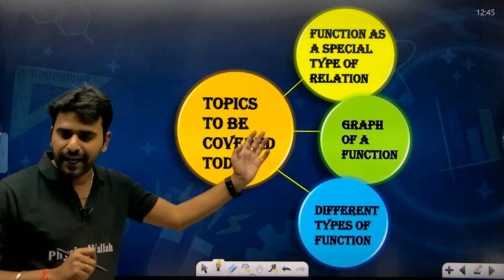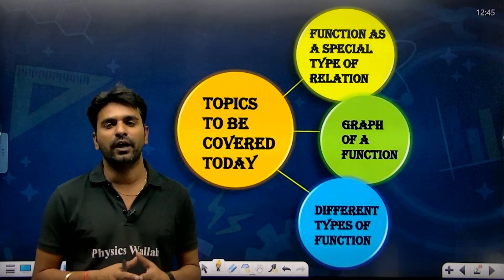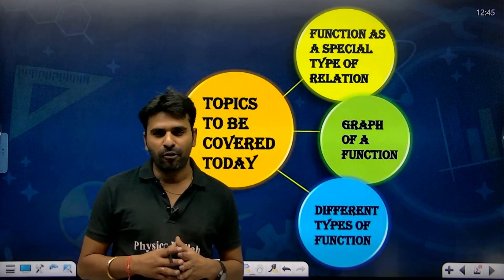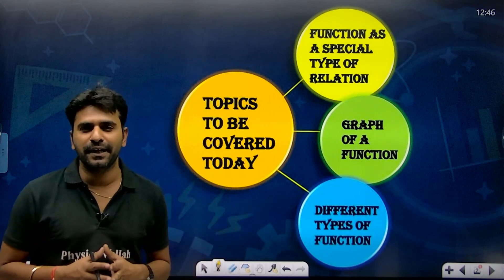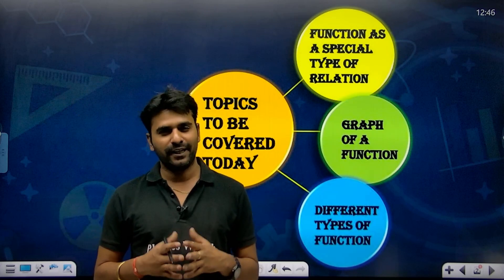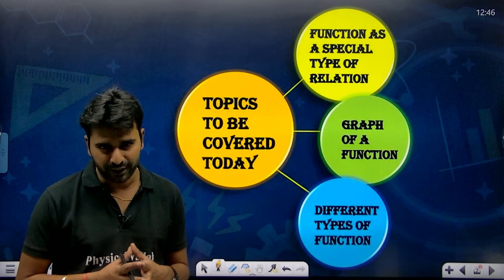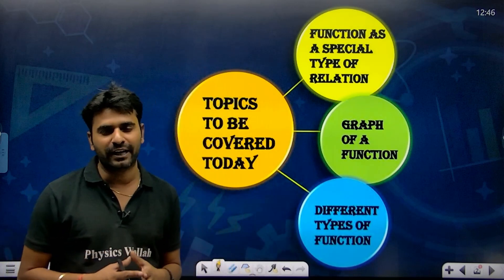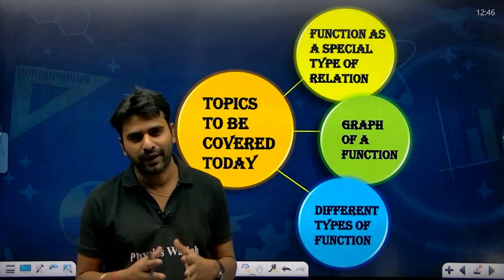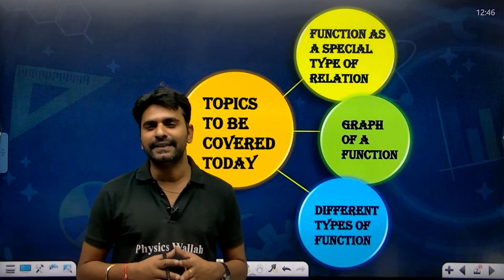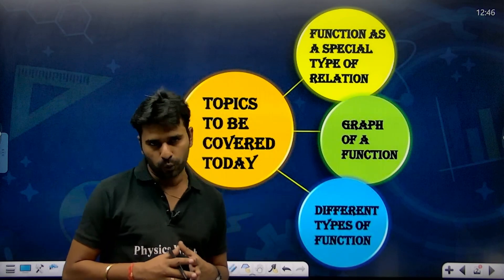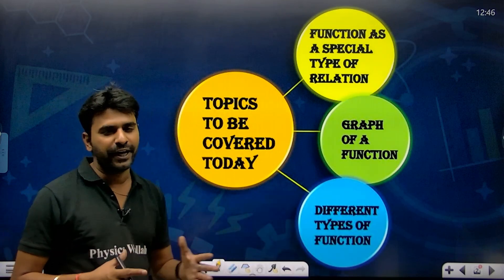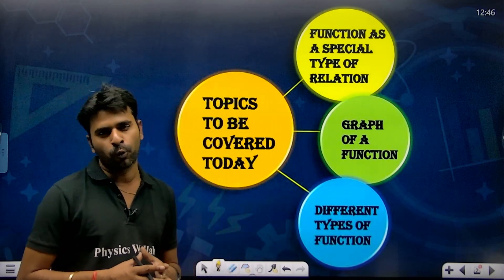Today we are covering the introduction to functions. A function is nothing but a special type of relation. Just as in real life we have marriages and then relatives are formed — and those relatives we invite to functions — similarly in mathematics, first we do Cartesian product (like marriage), then we organize relations, and now we are looking at functions. We will also cover graphs of functions and types: onto, into, one-one, many-one, and bijective functions.